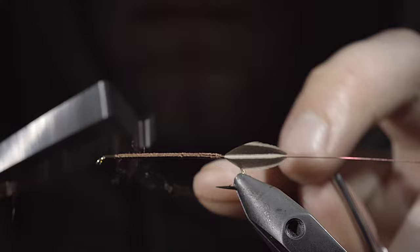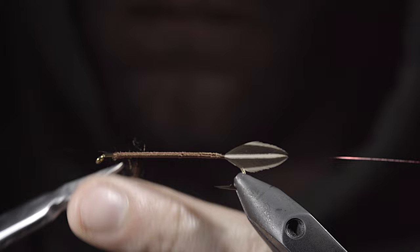Once we reach the head of the fly, put in a couple turn whip finish, snip the excess free, and if yours frays like mine, carefully use a lighter to burn away the excess.